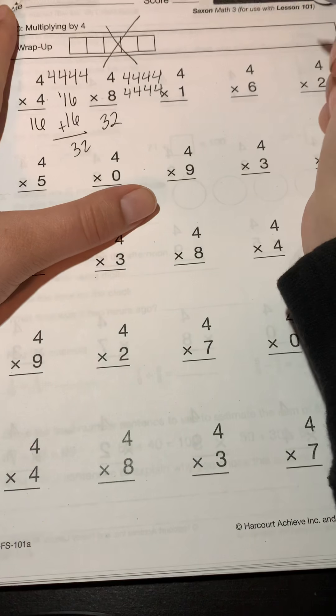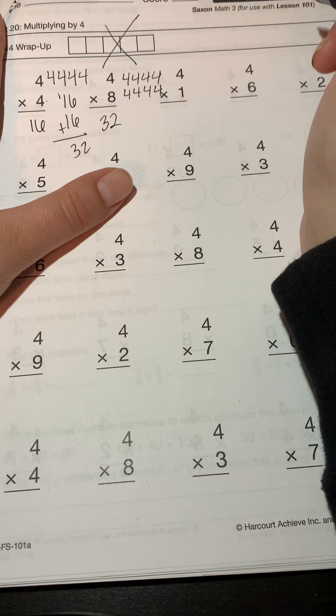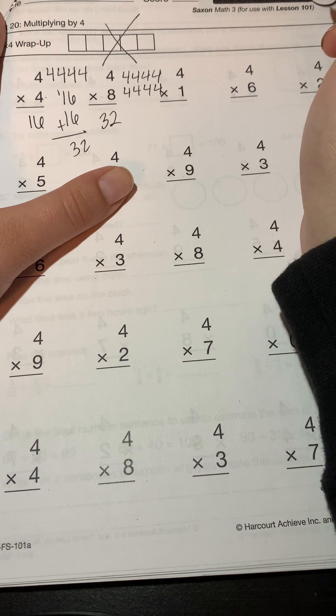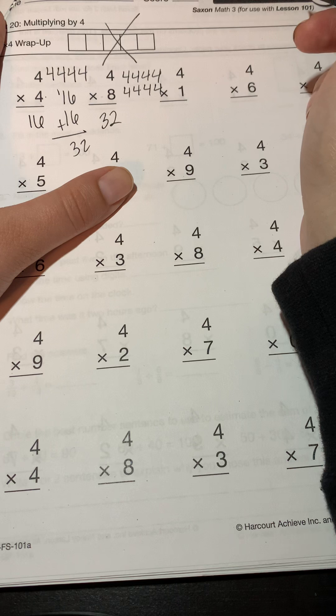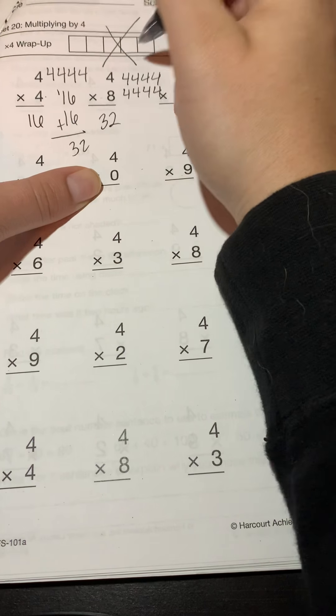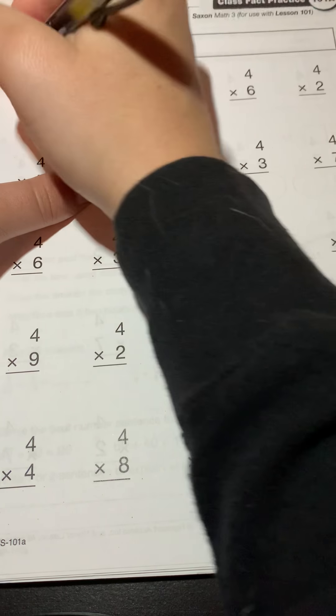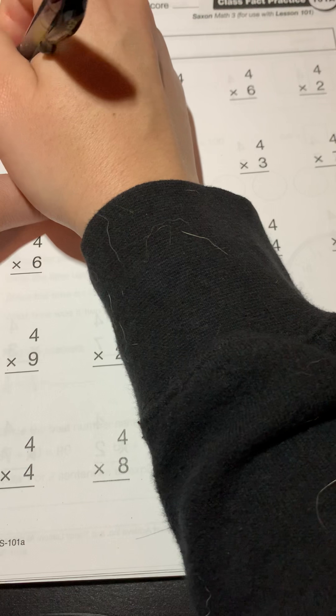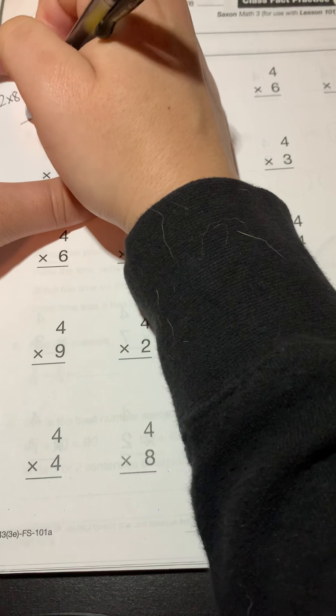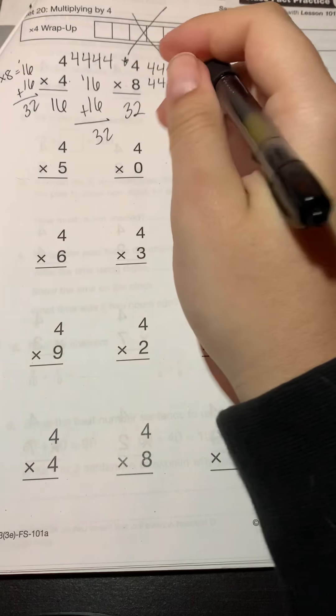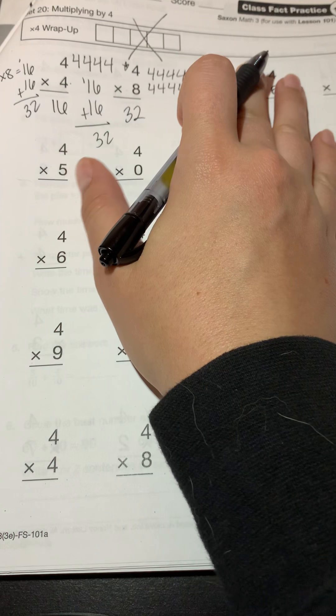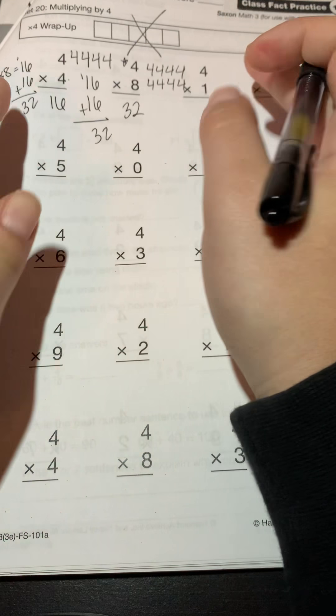What about - there's one more strategy that you can use if you know your twos. What is that strategy? I can do the same kind of doubling thing. So if I know that 2 times 8 gives me 16, I'm gonna do the same thing - I'm just gonna take 16 plus 16. Excuse me, sorry about that.